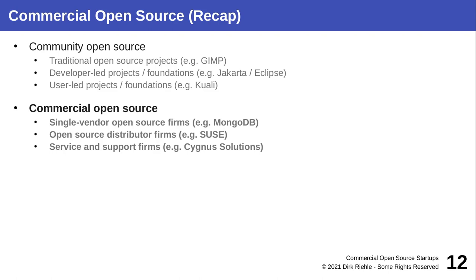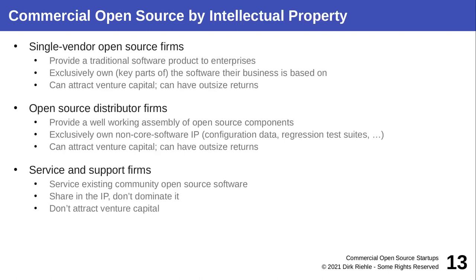There are three forms of commercial open source firms. First, single vendor open source firms, which we will discuss in detail. Second, open source distributor firms, which we will also discuss. And third, service and support firms, which are really just consultancies, which we will only briefly touch on. The dominance is in single vendor open source firms and to some extent in distributors. Single vendor open source covers some application or component, while a distribution covers something the size of an operating system, making it much less common.